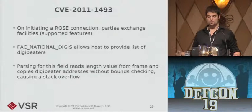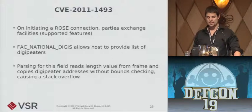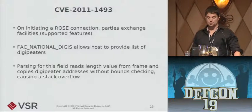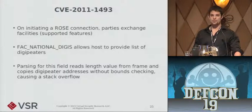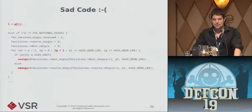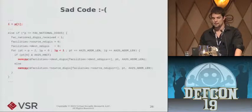When two hosts issue a connection to each other using ROSE, they exchange what are known as facilities — a list of supported features for that connection. One of these facilities, FAC_NATIONAL_DIGIS, allows one host to give the other a list of digipeaters for routing. In the Linux kernel implementation, I noticed that when parsing this particular field in the ROSE frame, they read this length value directly from the frame and copied all the digipeater data without any bounds checking into a statically sized buffer on the kernel stack.